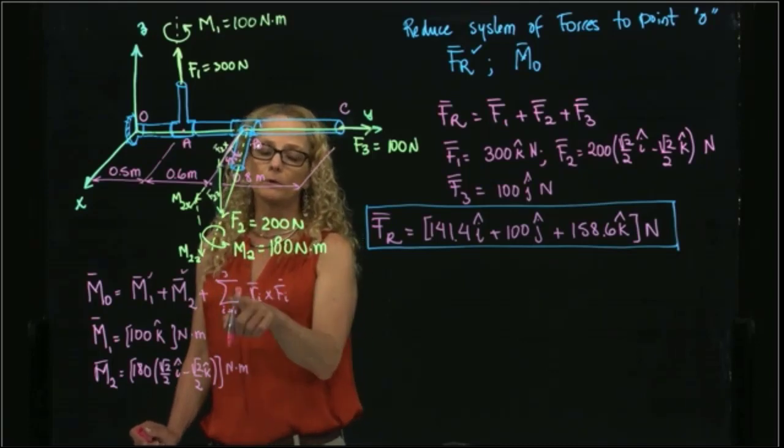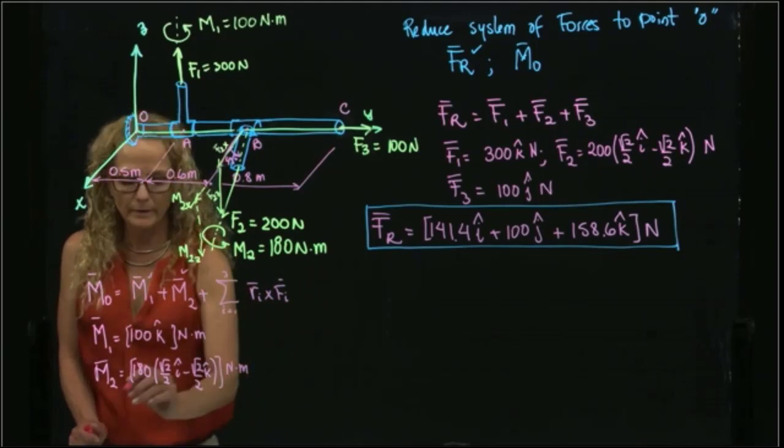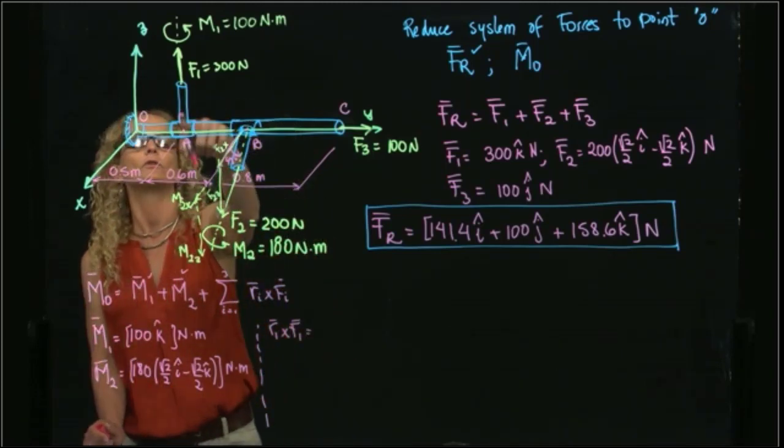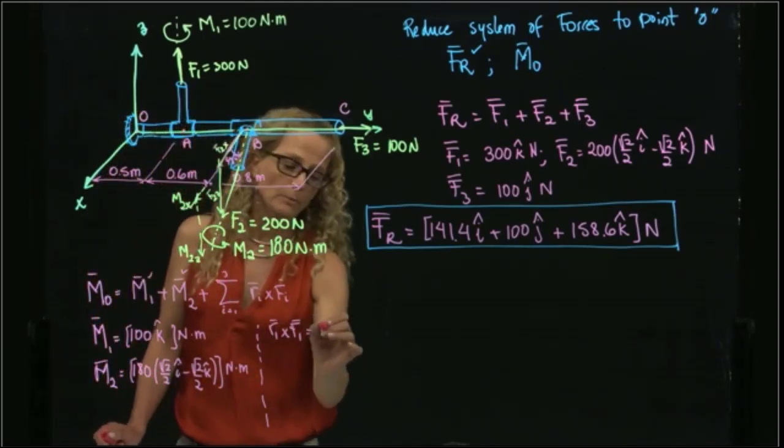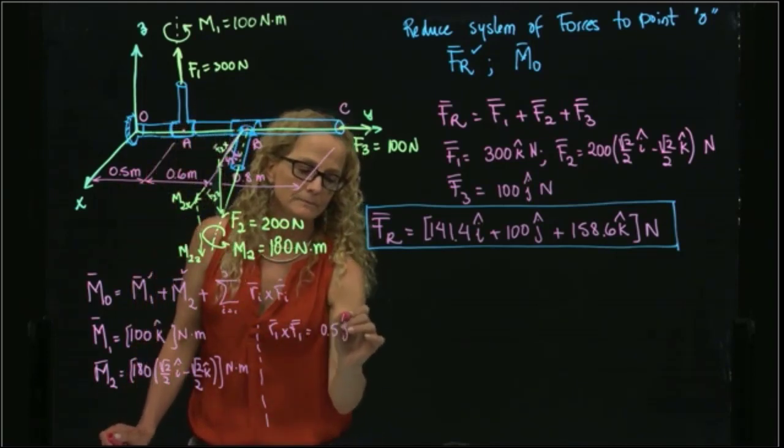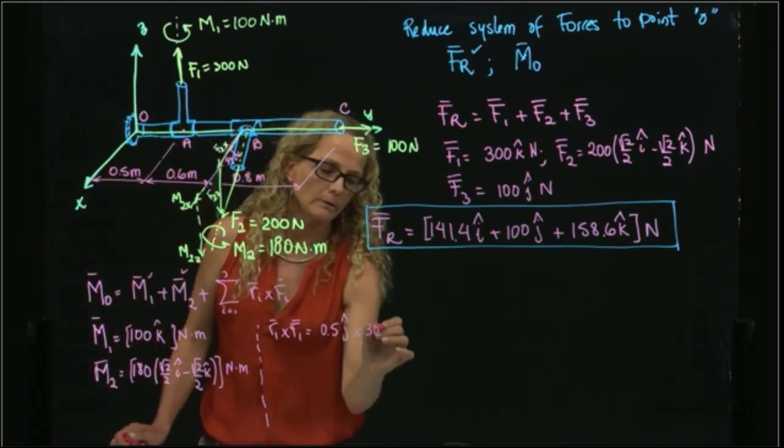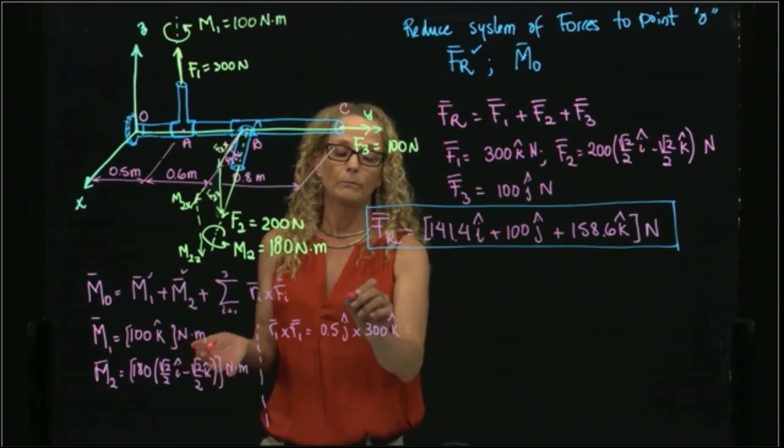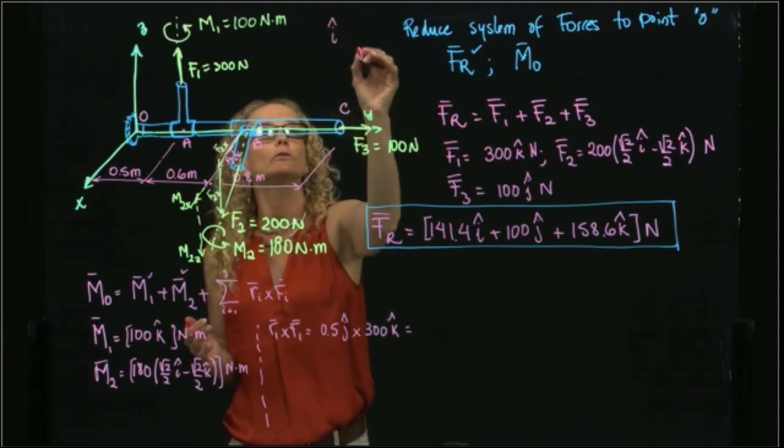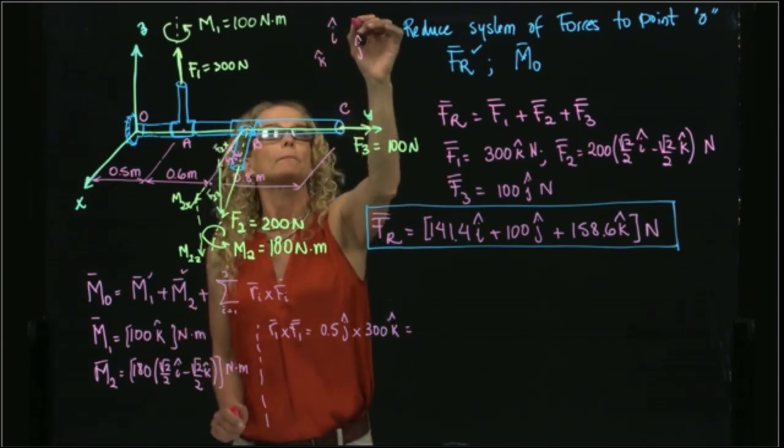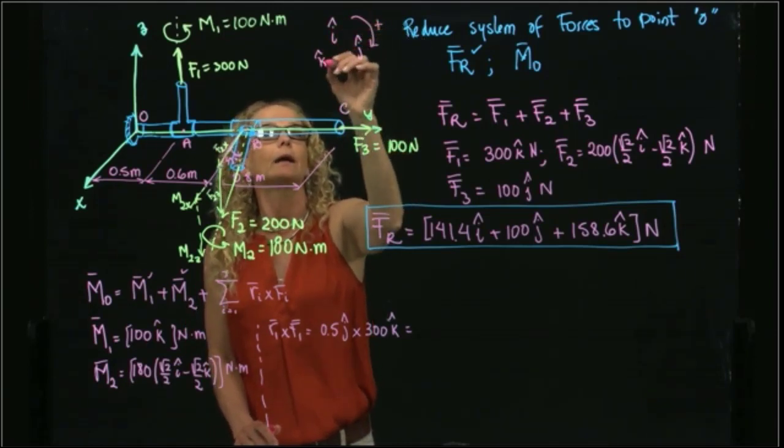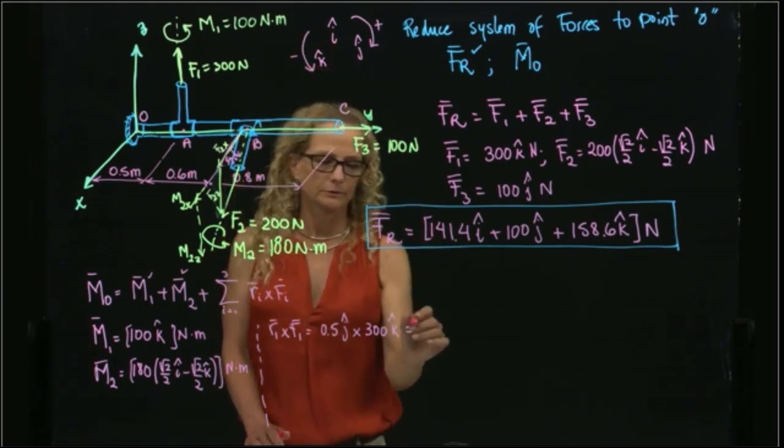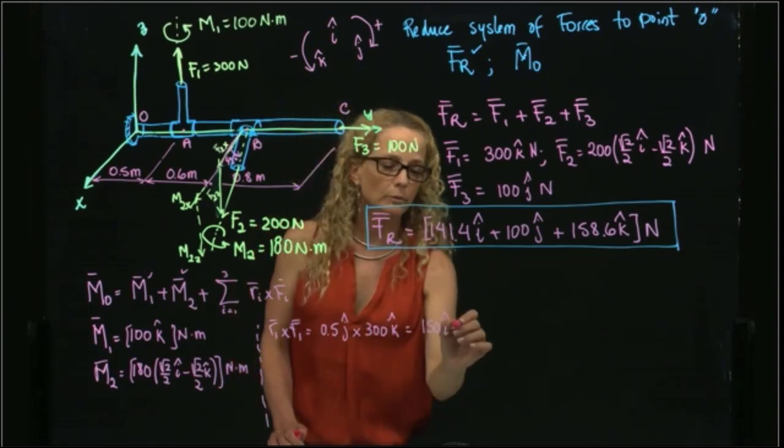Now we have to find the moment that produces each of these forces. So let's find the first one. I will say r1 cross F1 will be the moment produced by the force F1. In this case, we have 0.5 in j cross product F1, which is 300 in k. This one is so easy that I don't have to do a matrix, because the multiplication is j cross k. Remember, we always can use our little cheat sheet here that we have: i cross j is k, and k cross i is j, and j cross k is i, and if I go in this direction, it's negative. So j cross k is i. So here I will have 150 in i, and this will be newton meters.